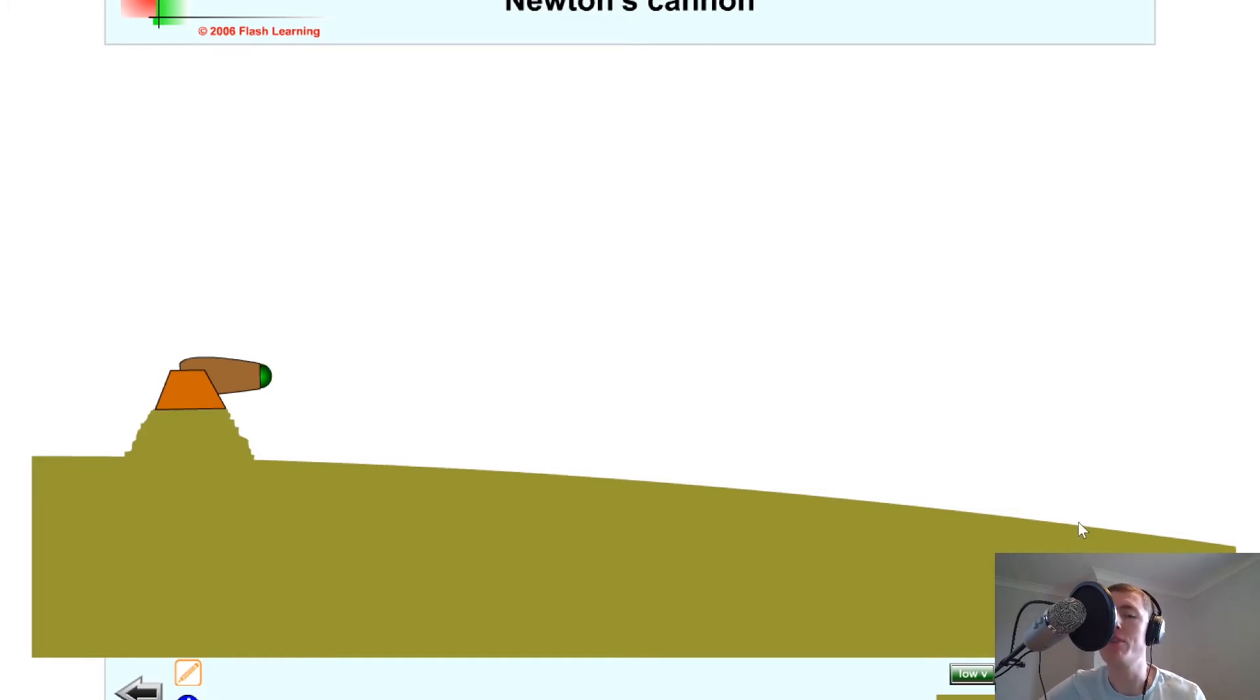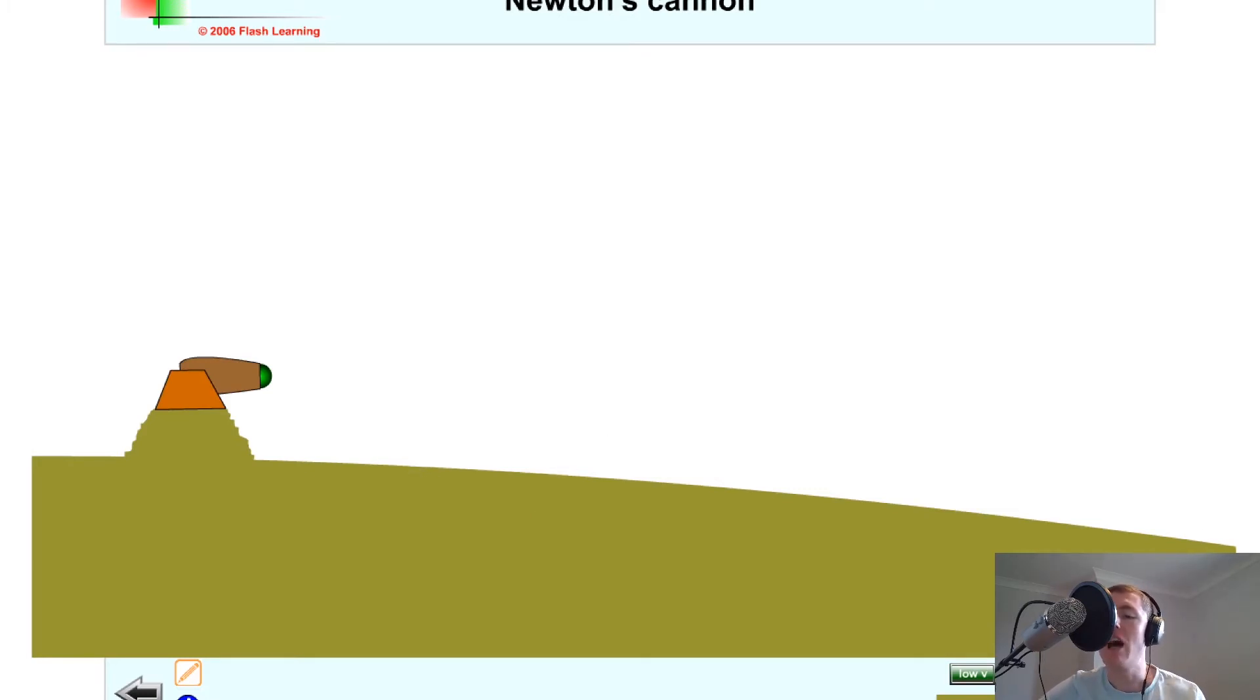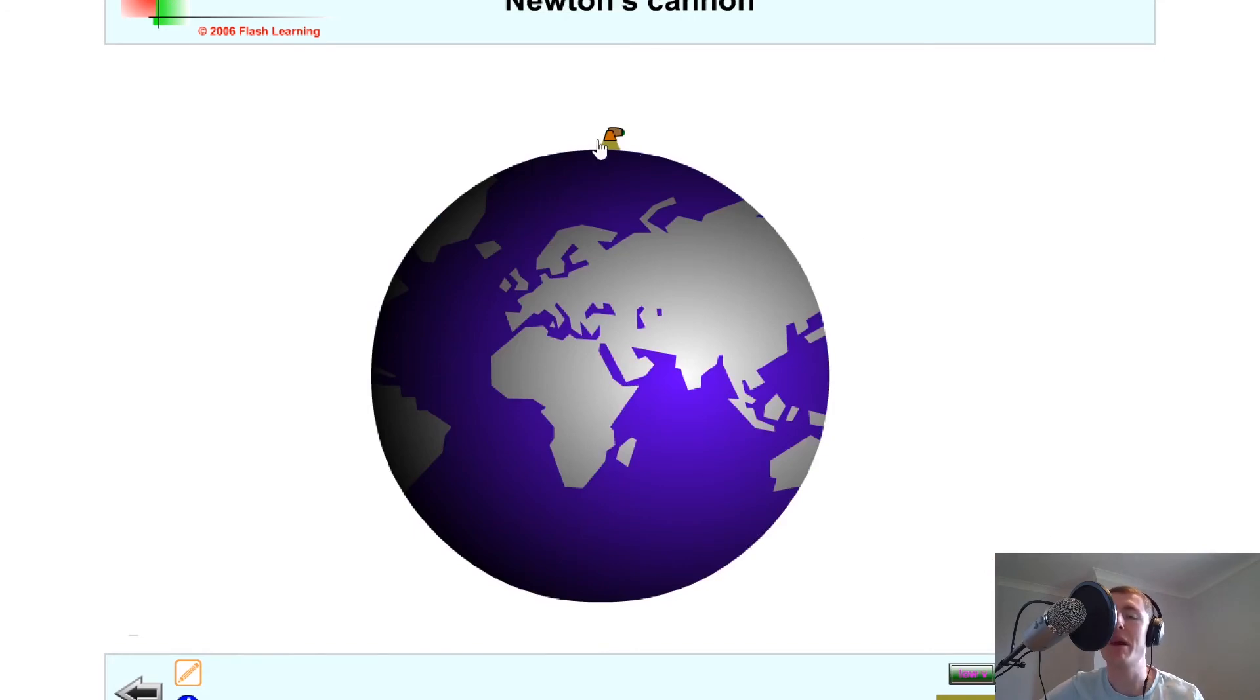And it's traveling far enough that we actually need to take the curvature of the Earth into account, which is why you can see it's slightly curving here now. And lastly Newton said what happens if we take an even bigger cannon on the Earth's surface and we project it with a high velocity again? Well notice that we're now taking into account the curvature of the Earth but it's going to come in and hit the Earth at some point along its motion here.